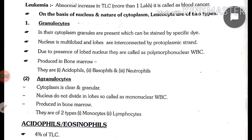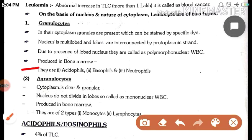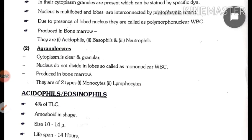Granulocytes produce in bone marrow. They are acidophils, basophils, and neutrophils. Main figure ke madhyam se bhi aapko dikha dunga, to us samay dekh lijiyega.